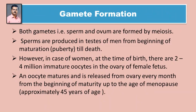Next, gamete formation - manje yugmak nirmiti. Both gametes, that is sperm and oocyte, are formed by meiosis. Sperms are produced in the testes of men from the beginning of maturation, that is puberty, till death. Manje shukrapeshi manje ch shukranu aani andapeshi hi doni yugmake ardhasutri vibhajanane tayaar hotat.